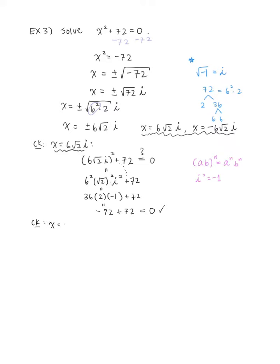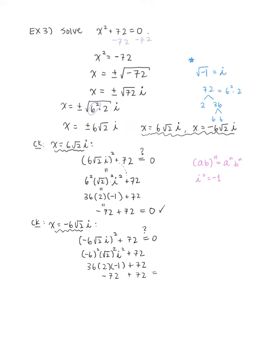Now let's check negative 6√2i. We get (−6√2i)² + 72. Distributing the exponent: negative 6 squared times (√2)² times i² gives 36 times 2 times negative 1, which is negative 72. Then negative 72 plus 72 equals 0. It checks. So our solution set is {6√2i, −6√2i}.